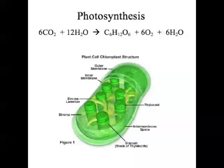A really important organelle not found in animal cells is the chloroplast. Chloroplasts are found in plant cells, and in chloroplasts, sunlight energy is converted into chemical energy via the process of photosynthesis. Chloroplasts have chlorophyll in them, which is a green pigment, and all the enzymes necessary for photosynthesis to occur.